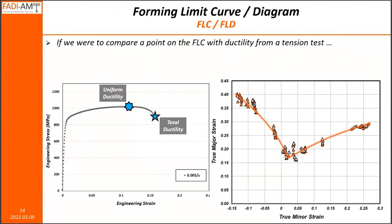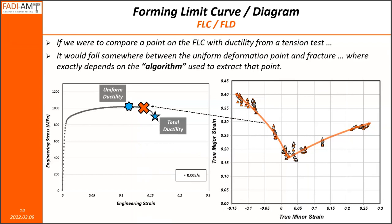What does an FLC represent in terms of failure? Is it fracture, or is it before fracture? Any point on that FLC would technically fall somewhere in between the point of uniform deformation and fracture. Whether it's closer to the uniform ductility point or the total ductility point really depends on the method or algorithm used to extract that point. The more conservative ones head towards the uniform ductility, and the less conservative ones push it closer to the total fracture point.